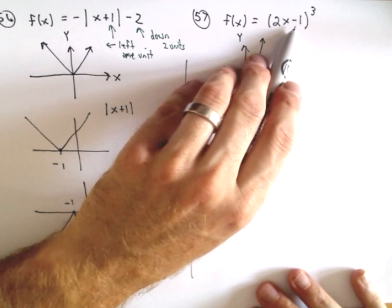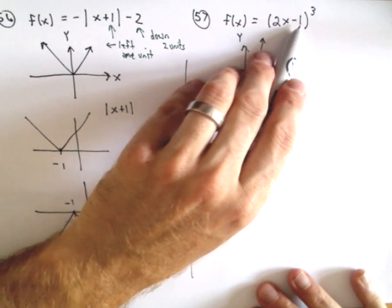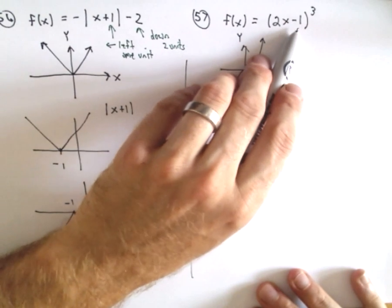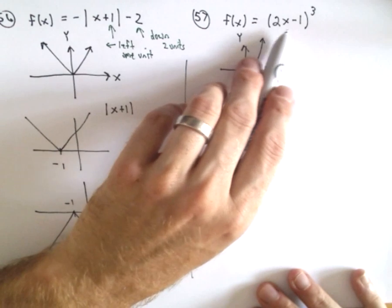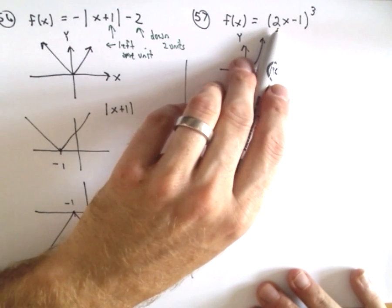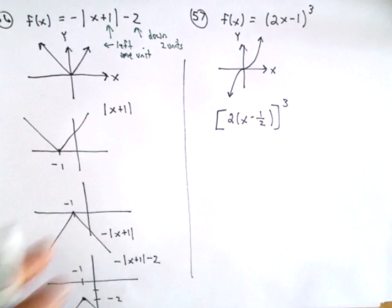You know, at the beginning if you think, okay, this is going to be shifted 1 unit to the right because I see this -1, that's no longer valid because the coefficient in front of the x is not just a 1. So the shifting gets changed in that case.